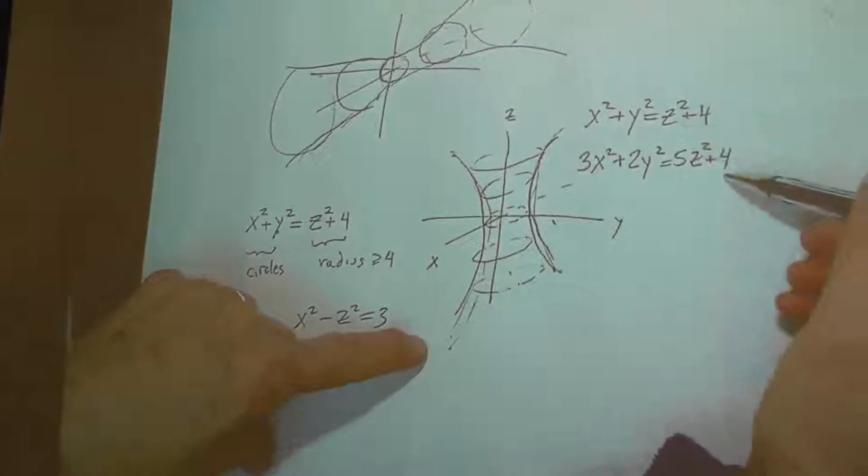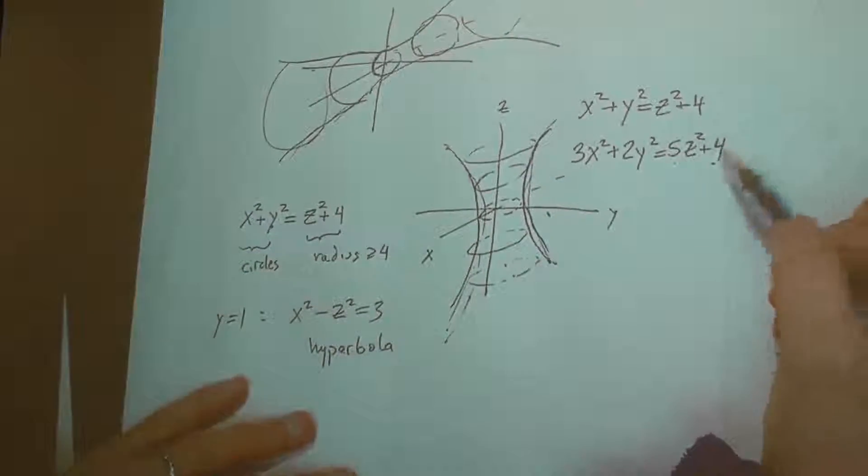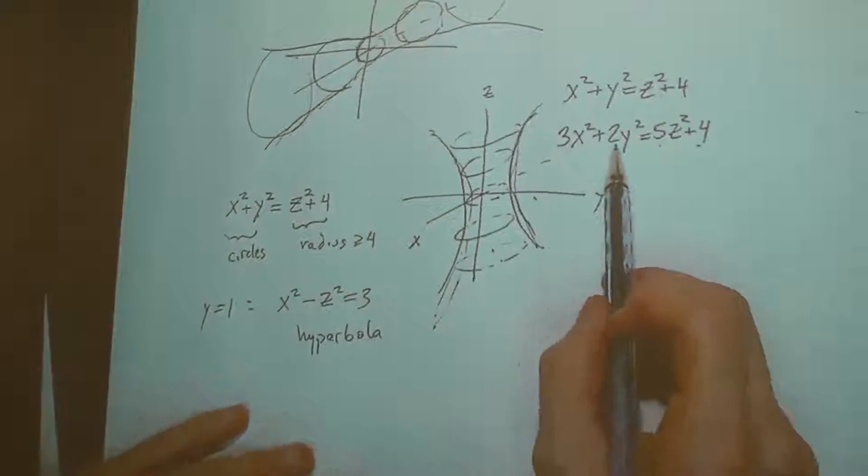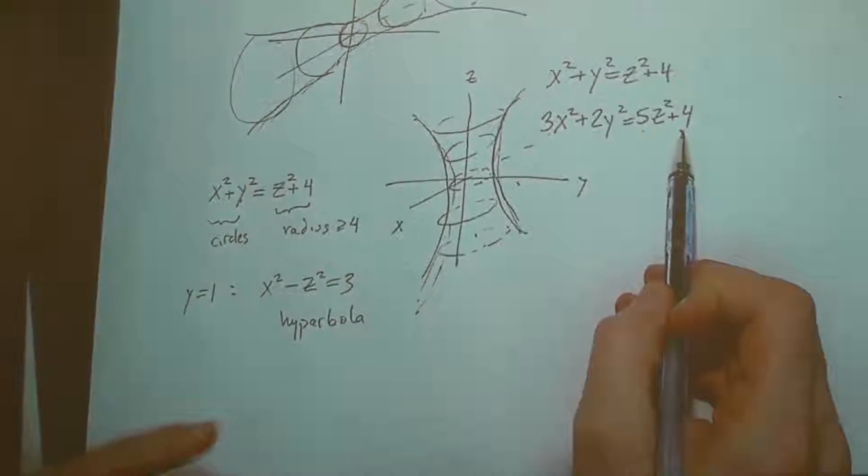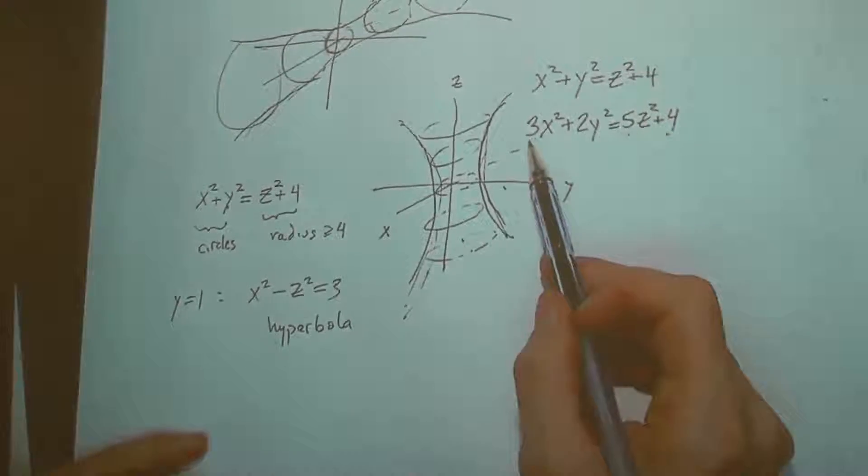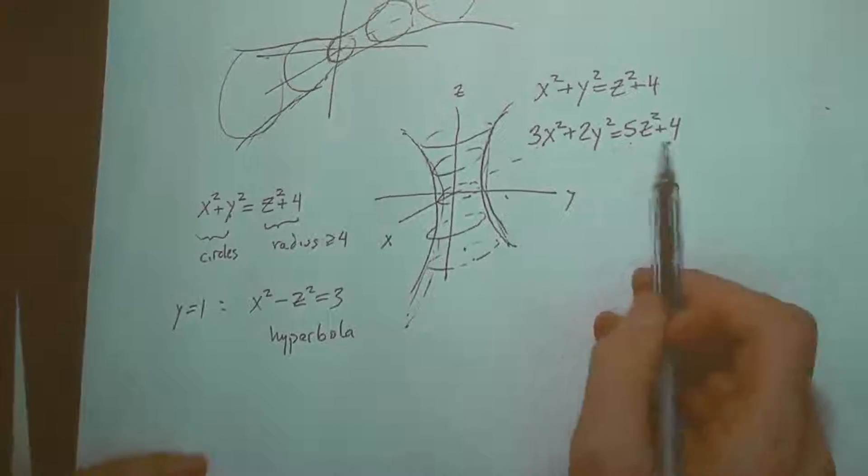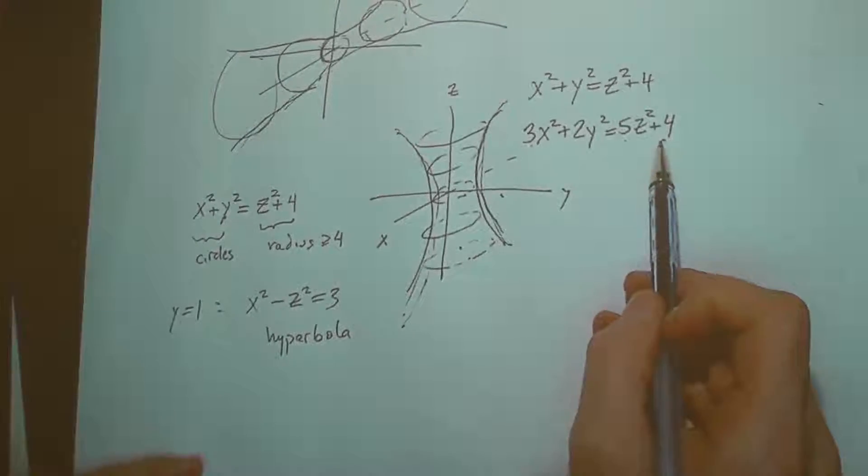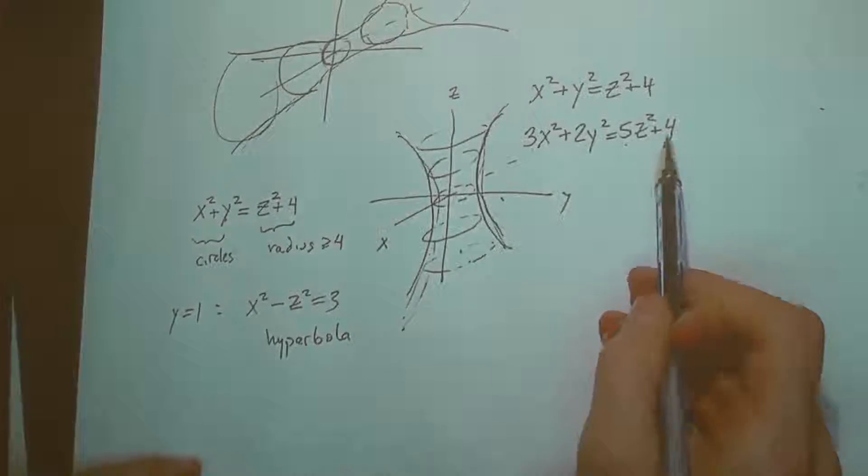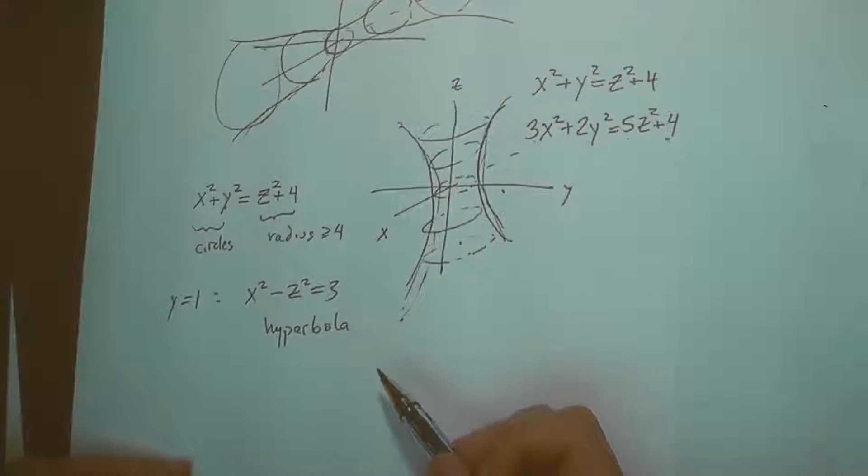It's going to be wrapped around the z-axis. If you let z equal zero, you have three x squared plus two y squared equals four. It's an ellipse. If z is plus or minus one, three x squared plus two y squared equals five. Bigger ellipse. Questions here.